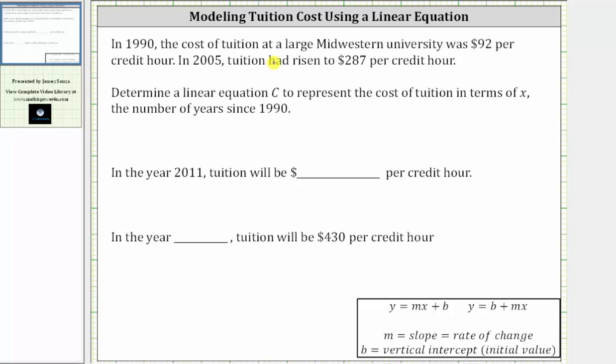In 1990, the tuition cost at a large Midwestern university was $92 per credit hour. In 2005, tuition had risen to $287 per credit hour. Determine a linear equation C to represent the cost of tuition in terms of x, the number of years since 1990.